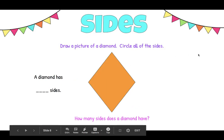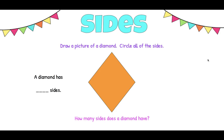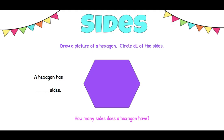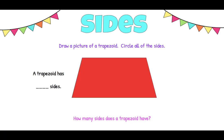Let's go on to the next shape. We have a diamond. Now how many sides does a diamond have? A diamond has four sides. This is a hexagon — look at all those straight lines. How many are there on a hexagon? A hexagon has six sides. This is a trapezoid. Look at those straight lines, those sides. How many sides does a trapezoid have? It has four sides.